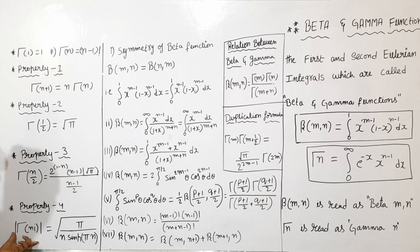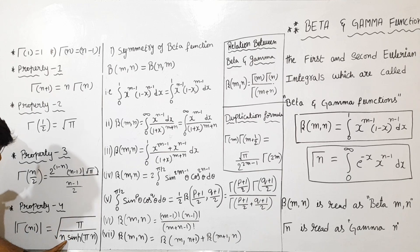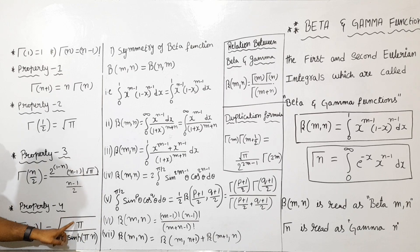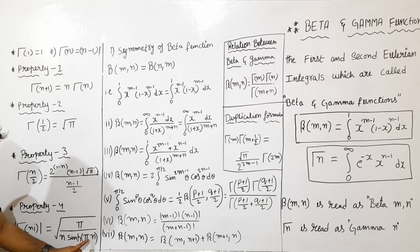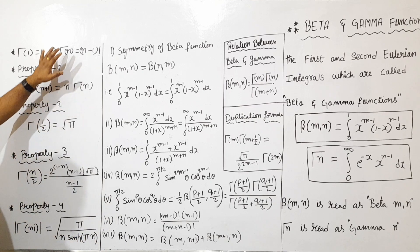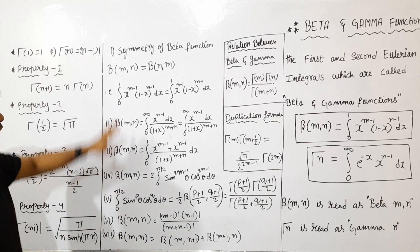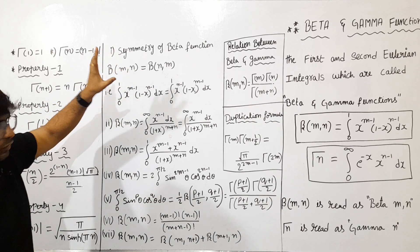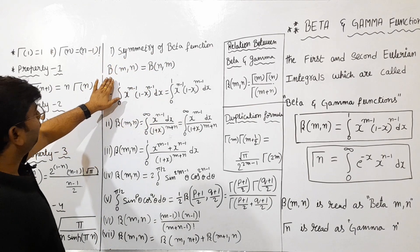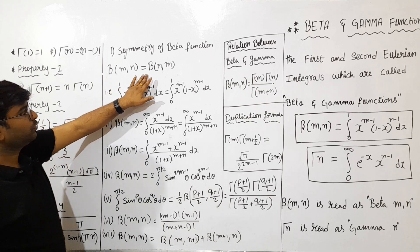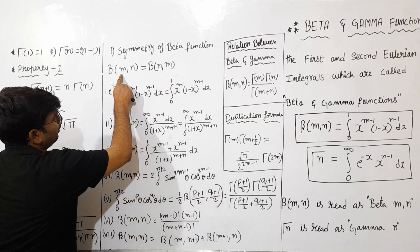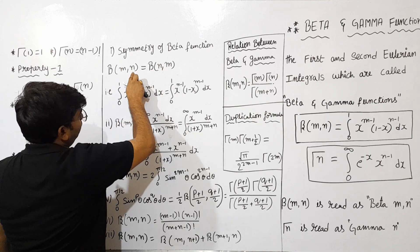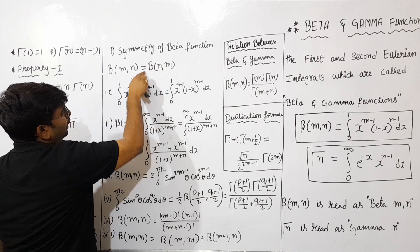Fourth property: the modulus of Gamma(n) times Gamma(1 minus n) is equal to pi divided by sin(pi·n). Now for the symmetry of the Beta function — Beta(m,n) is equal to Beta(n,m). That is the symmetry property — swapping m and n gives the same result.